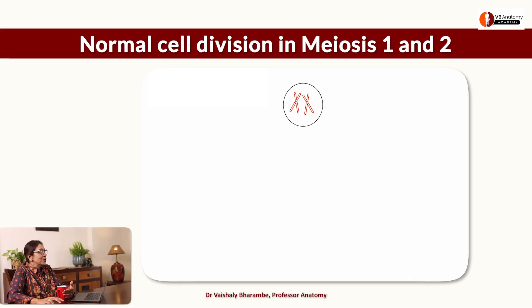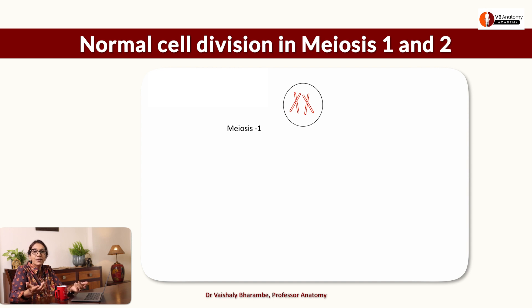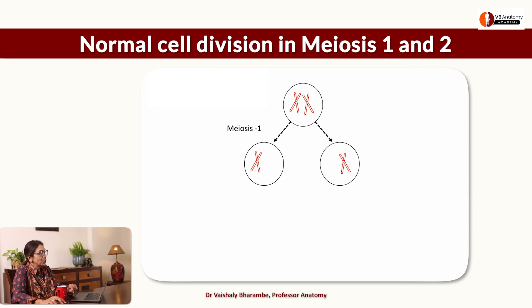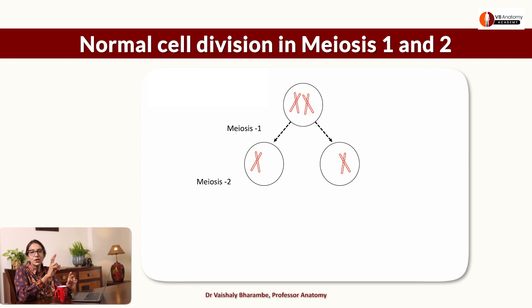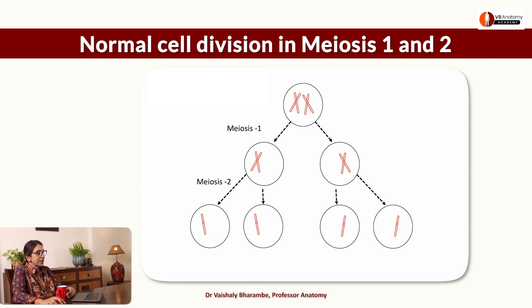Let's use images to understand — images speak way more than words. Here you are seeing normal meiosis 1 and 2. In this normal cell going into gametogenesis, during meiosis 1, the two chromosomes go to each daughter cell — one of a pair to each. Then in meiosis 2, the chromosomes split in the center — one chromatid from each goes to the daughter cell. As you can see, four normal haploid gametes are produced.